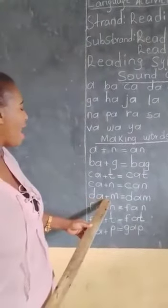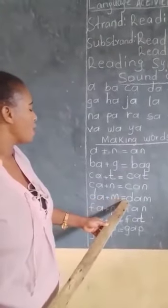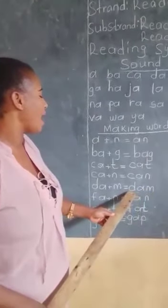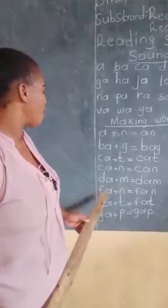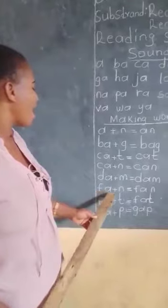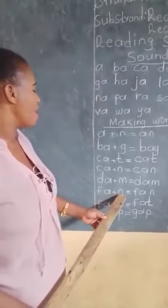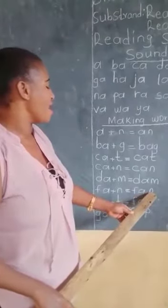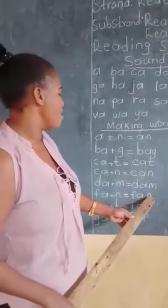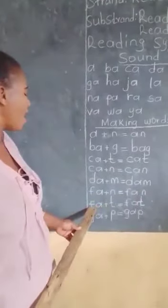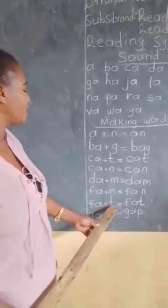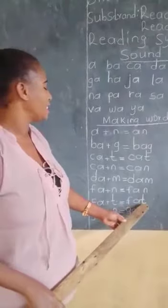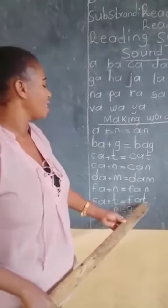Da plus d plus m — we get dam. Dam. Fa plus d plus n — we get fan. Fan. Fa plus d plus t — we get fat. Fat.